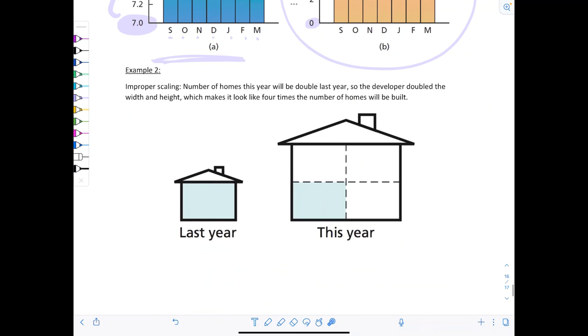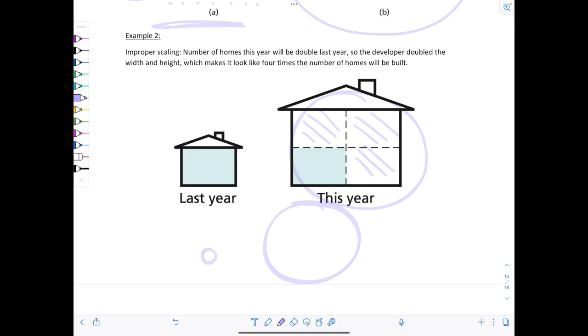The other thing is improper scaling. Say the number of homes this year will be doubled. The developer's making this graph: this was last year and now we're doubling how many homes we're making. They took this dimension, doubled it, then took this dimension and doubled it. But area is a two-dimensional quantity. If you double both components, you're actually quadrupling the area. This is deceptive because it looks like they're actually going to build four times the real amount of homes. We're just going to have to identify what technique was going on to make a graph deceptive. When we make our graphs, we're not going to be deceptive.